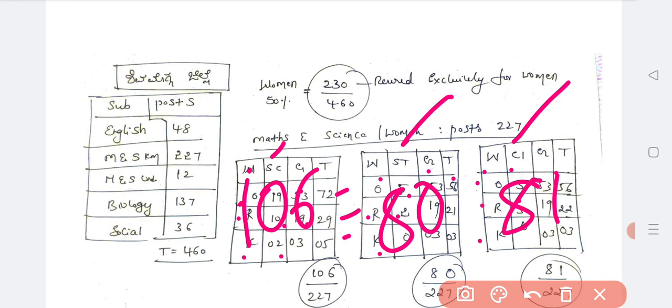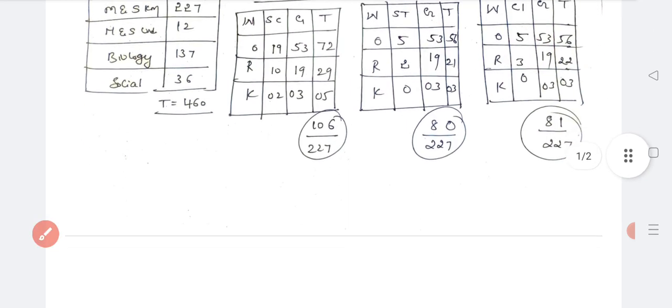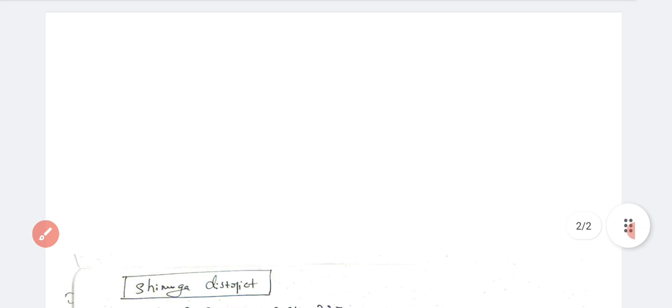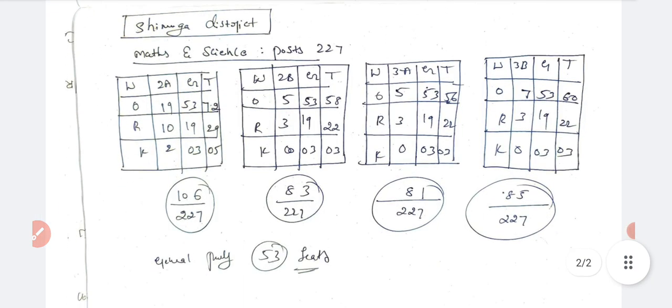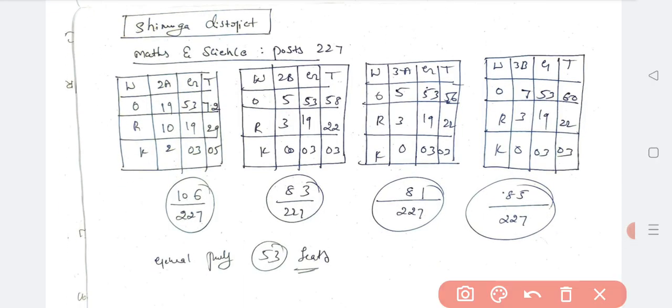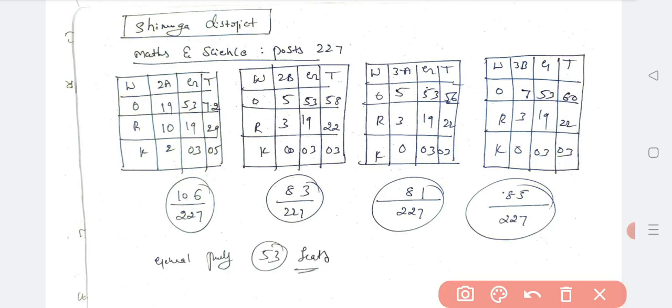Kannada medium, Maths and Science is a minimum. Next category is 101. UL0 category is same Shimoga district. Maths and Science, total post 27 is a minimum. That is 2A category is a minimum. Others are 19, General 53 is 72. Rural is 29, 10 plus 19. Kannada medium is 2 plus 3 is 5. Totally 160 seats will be with a minimum 2A category, Kannada medium is rural women.